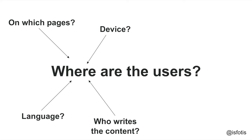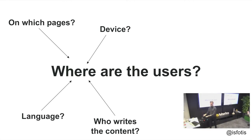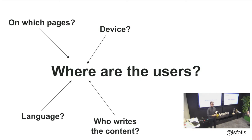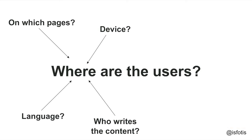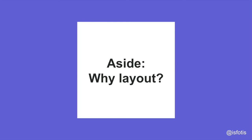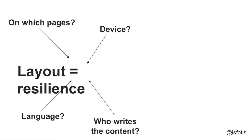'Where are the users' can also have other meanings. On what device is the user — a phone with a narrow screen, a tablet, a laptop? Which language are they on? We support 14 languages officially. And importantly, who writes the content they see on screen — is it hard-coded by us, curated by somebody on the FIBA team, or completely user-generated? That also affects what we're going to prioritize. And with those questions in mind, layout is resilience — if you can get the layout to scale well, most of these things work well.